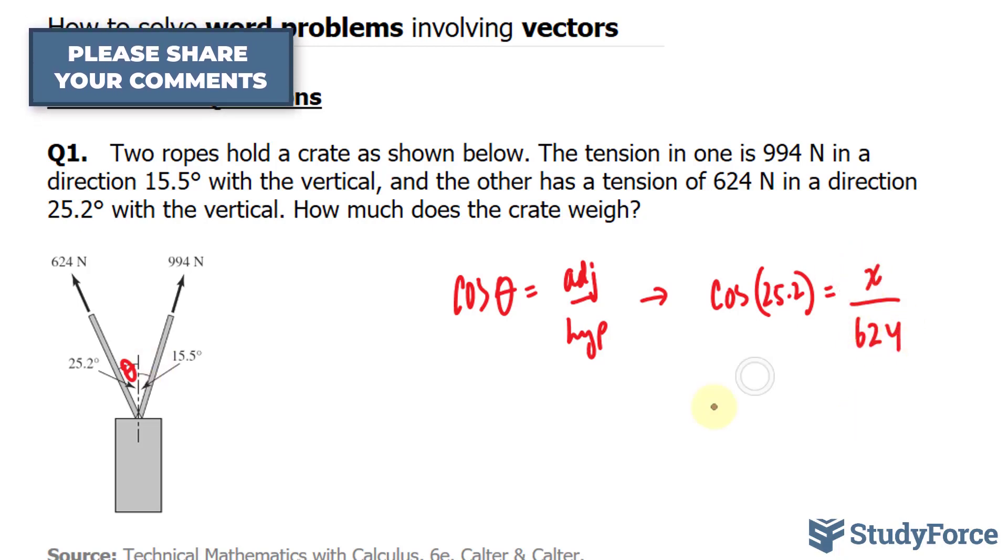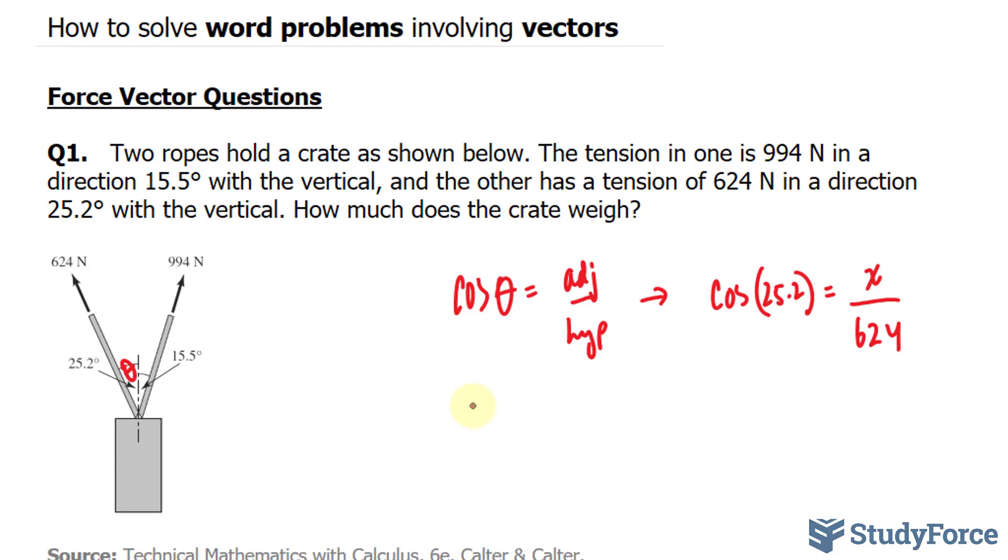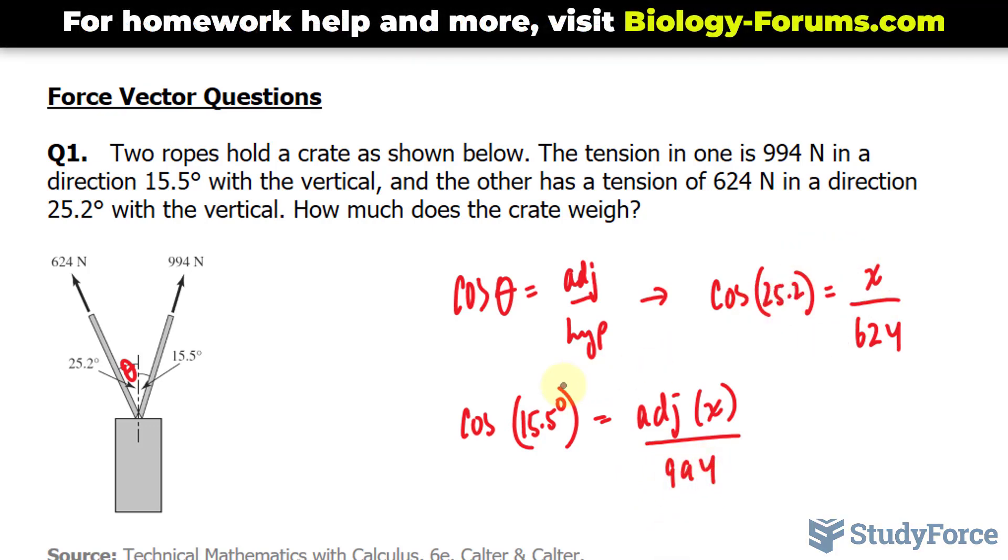Before we find x, let's do the same thing for this vector. Once again we'll be using cosine. This time our angle is 15.5 degrees. Our adjacent is what we're looking for. I'll write down adj or simply x as I did in the previous one. And the hypotenuse is 994. So I'll solve for x here, solve for x here and sum them up.